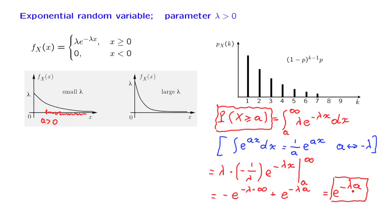An interesting additional observation, if we let a equal to 0 in this calculation, we obtain the integral of the PDF over the entire range of x's. And in that case, this probability becomes e to the minus lambda 0, which is equal to 1. So we have indeed verified that the integral of this PDF is equal to 1, as it should be.